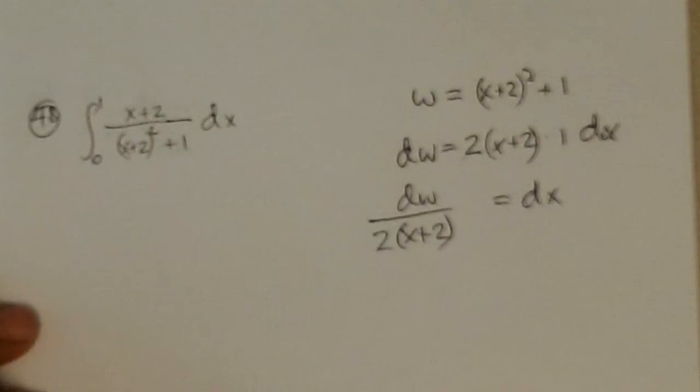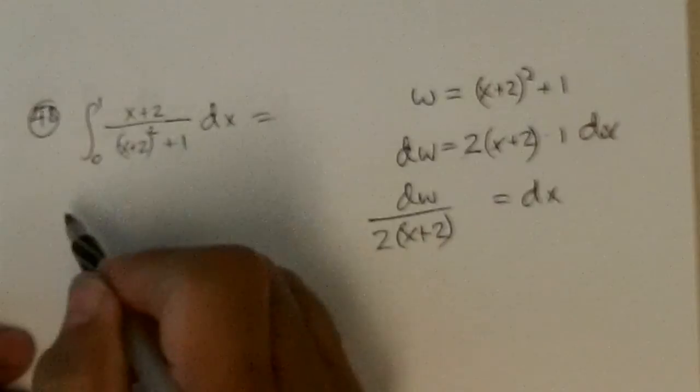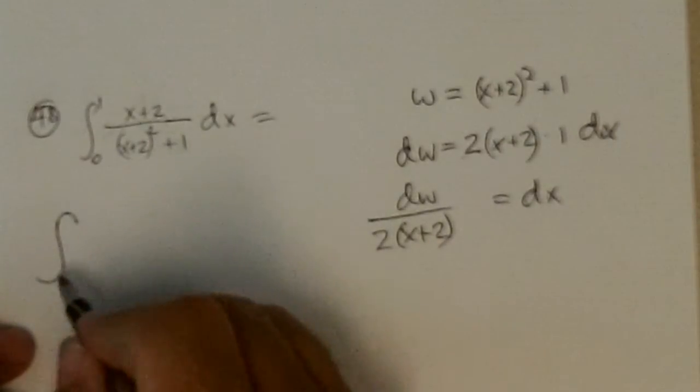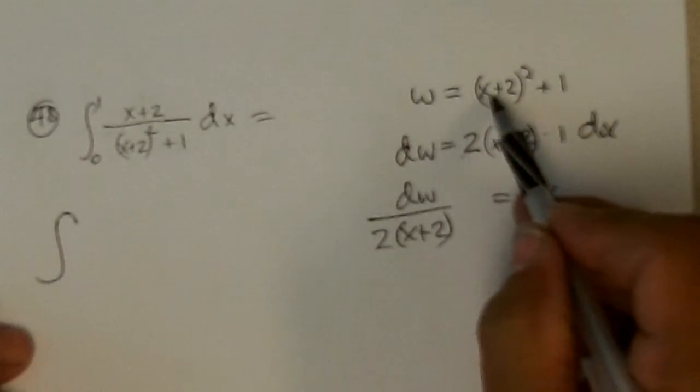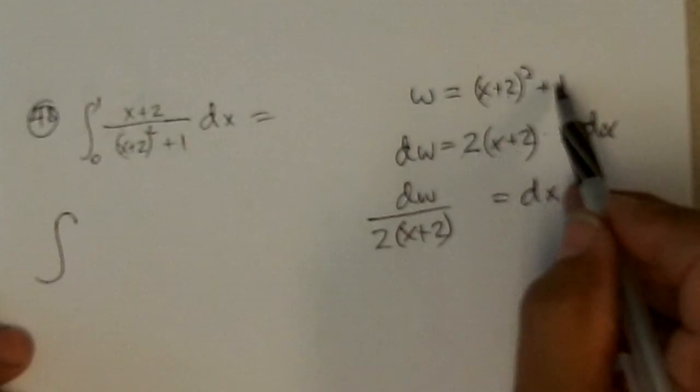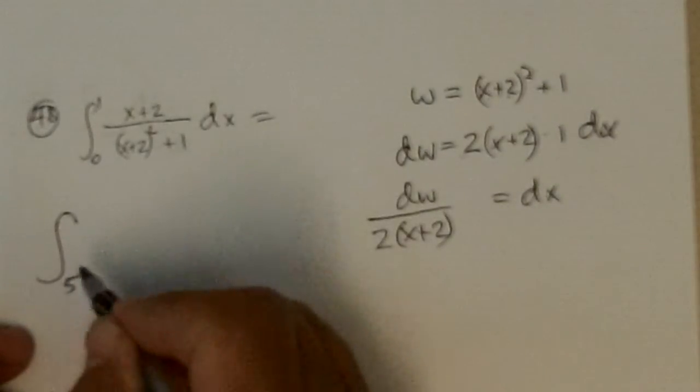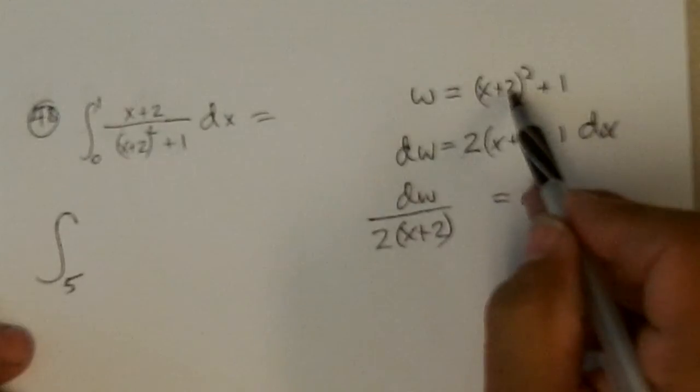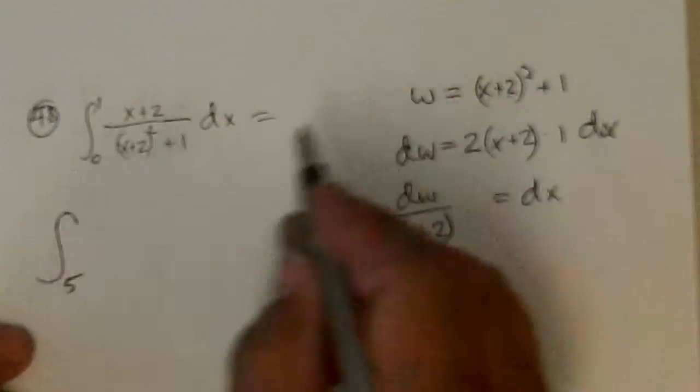And so when I substitute in, I get the integral. 0 in here is 4 plus 1, 5, and 1 in here is 3 squared, 9, plus 1, 10.